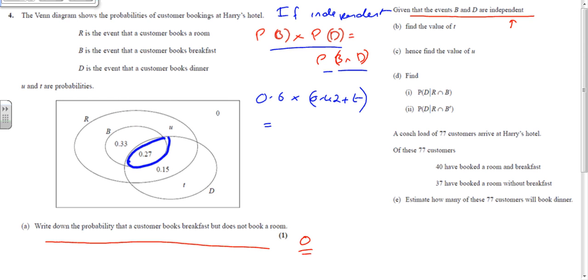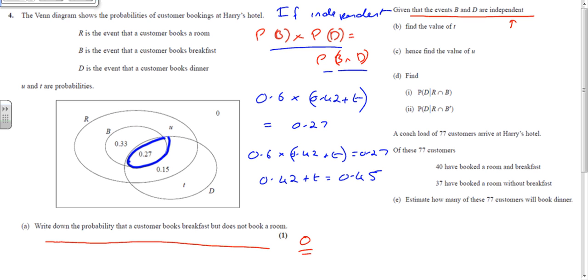Because they are independent, that equals the overlap P(B∩D) which is 0.27. So 0.6 times (0.42 + t) equals 0.27. Dividing by 0.6 gives 0.42 + t = 0.45, therefore t equals 0.03.